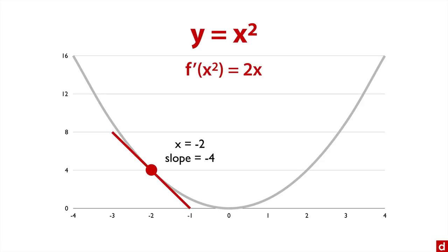Okay, what if we choose a different point? Let's say we come over here to x equals three. Well, the slope is equal to 2x. So that's two times three equals six.